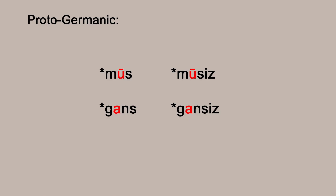Looking at an older stage, proto-Germanic, spoken about 2,000 years ago: in the nominative case you had mus and musiz — one mouse, many mice — and for goose you had gans and gansiz. Neither of those have vowel alternation; they're pretty much the equivalent of mouse/mouses and goose/gooses.